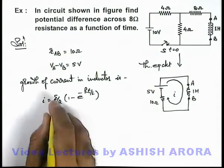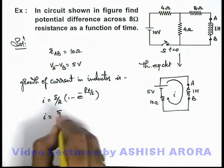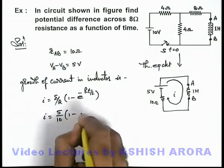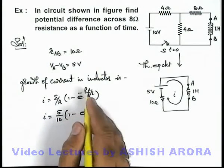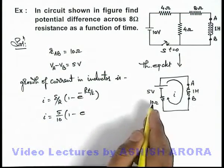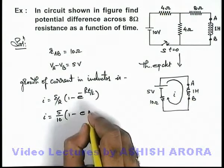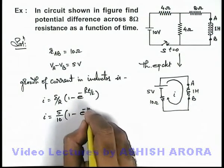If we substitute the values here, E is 5, R is 10, it is 1 minus e to power minus Rt by L. So here the value of R is 10, inductor is 1, so it will be written as minus 10t.